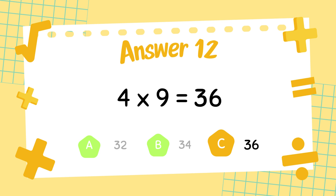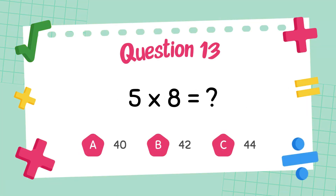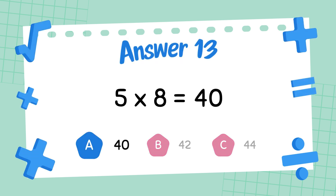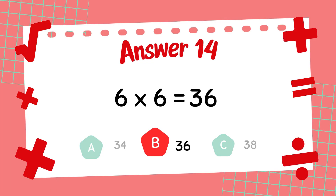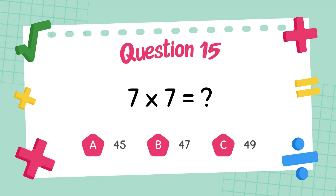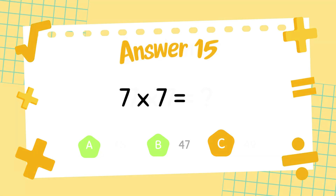The answer is 36. What is 5 times 8? The answer is 40. What is 6 times 6? The answer is 36. What is 7 times 7? The answer is 49.